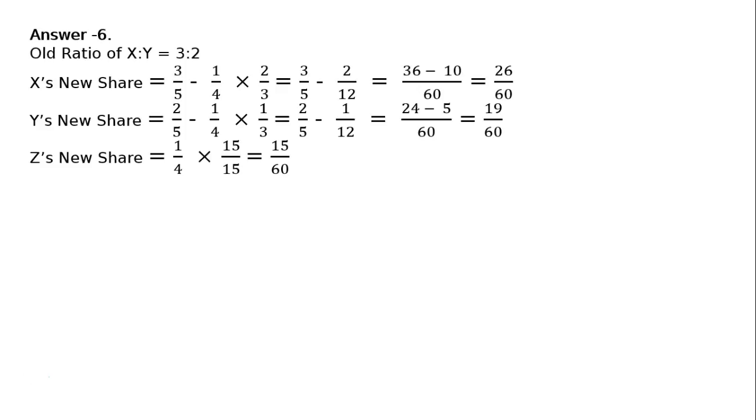To make the denominator equal to 60, we have to multiply to the numerator and denominator 15 upon 15, that is equal to 15 upon 60.